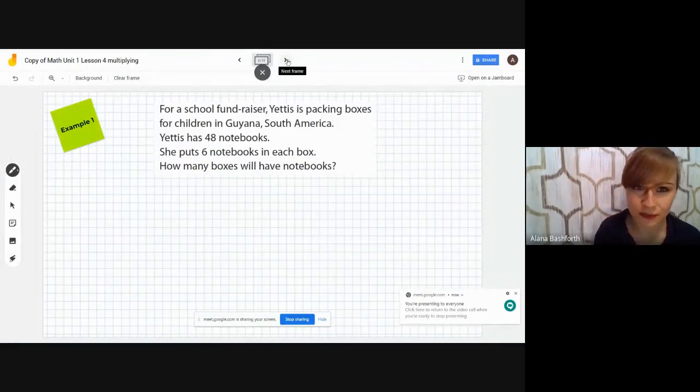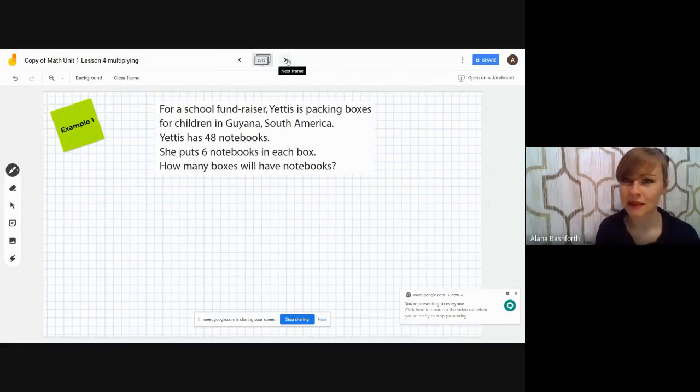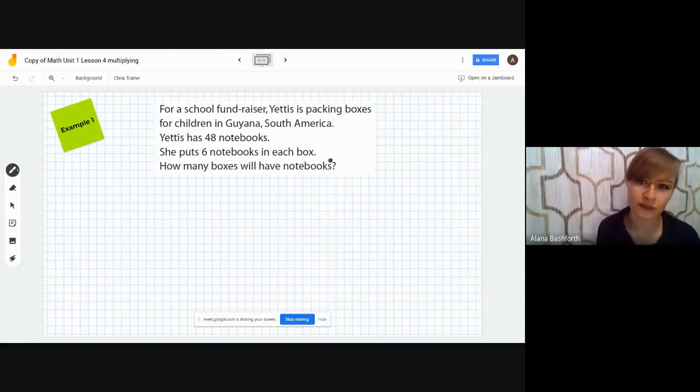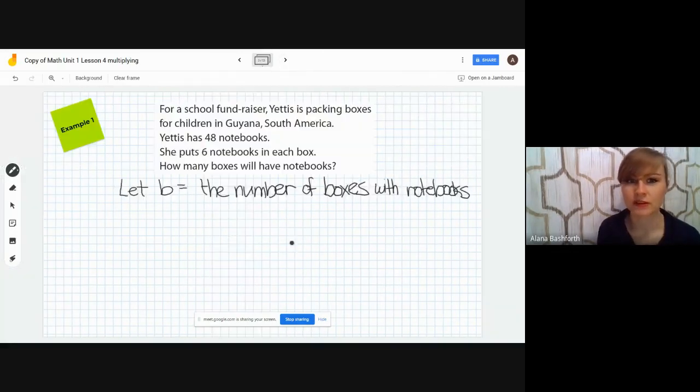Here's the first example. For a school fundraiser, Yetis is packing boxes for children in Guyana, South America. Yetis has 48 notebooks. She puts six notebooks in each box. How many boxes will have notebooks? The first thing we need to do is assign a letter to the unknown, and the unknown is how many boxes will have notebooks. Since it's boxes, we're going to pick B. Let B equal the number of boxes with notebooks.